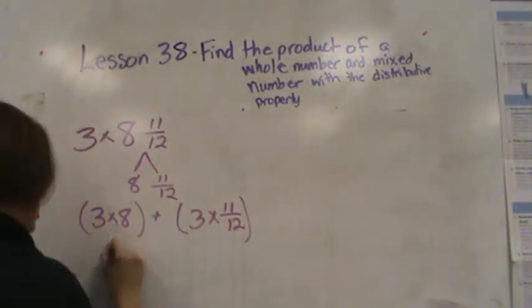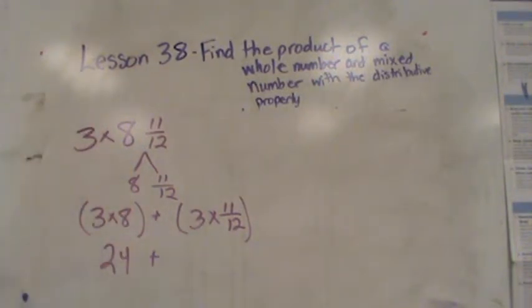3 times 8 is 24 plus 11 twelfths 3 times. 11 twelfths, 22 twelfths, 33 twelfths.